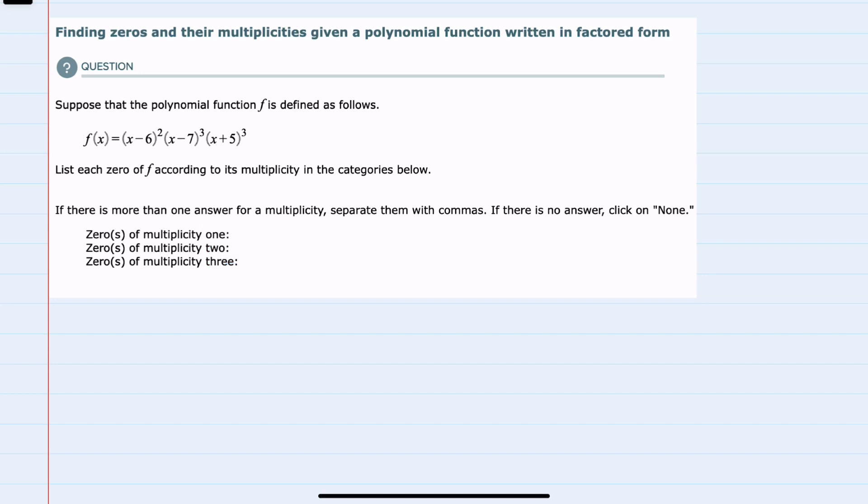To find the zeros, our f of x, which is our y value, would be zero. So I'll rewrite this as zero equals the rest of that function written out.